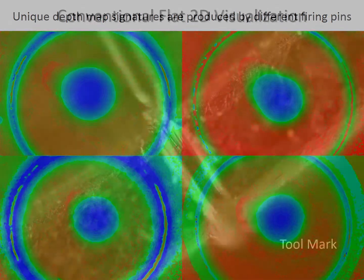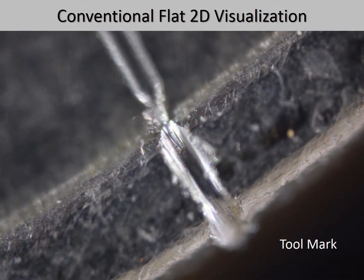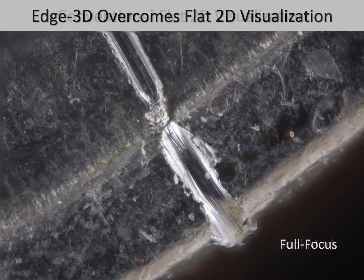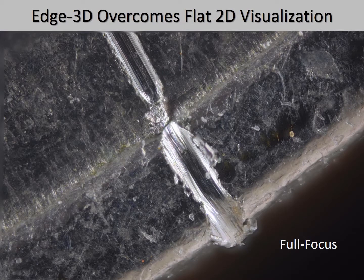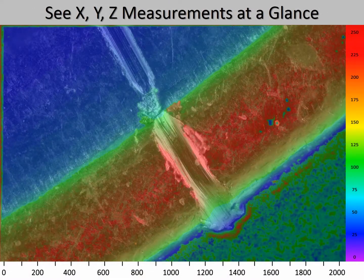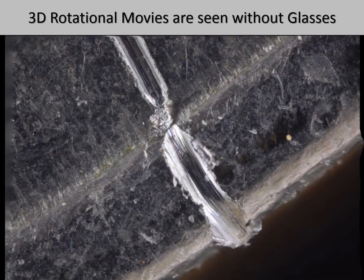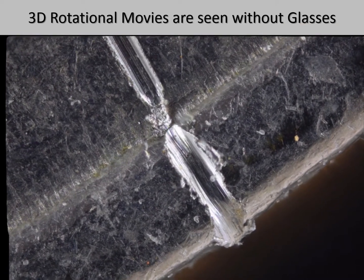Here is a two-dimensional image of a tool marking on a piece of metal, and as we can see, only a small portion of the image is in focus. Now, with the EDGE 3D Microscope, the entire tool marking is seen in full focus. This tool marking can be precisely quantified by analyzing the calibrated 3D color depth image, and the depth information is visualized using a 3D rotational video loop.